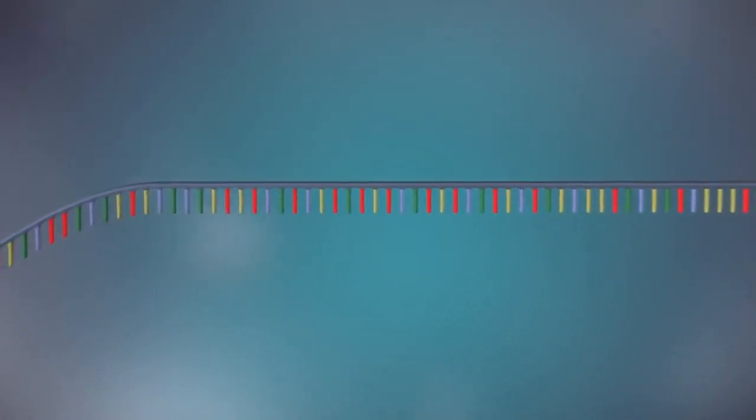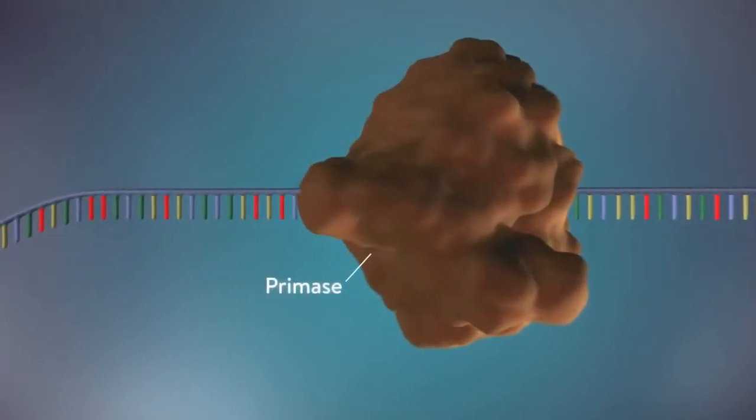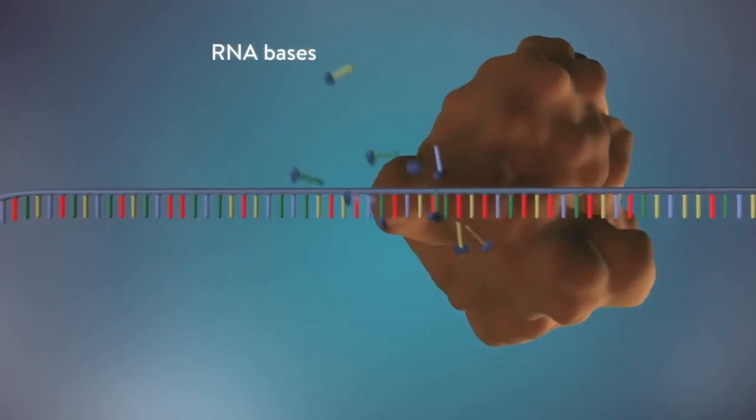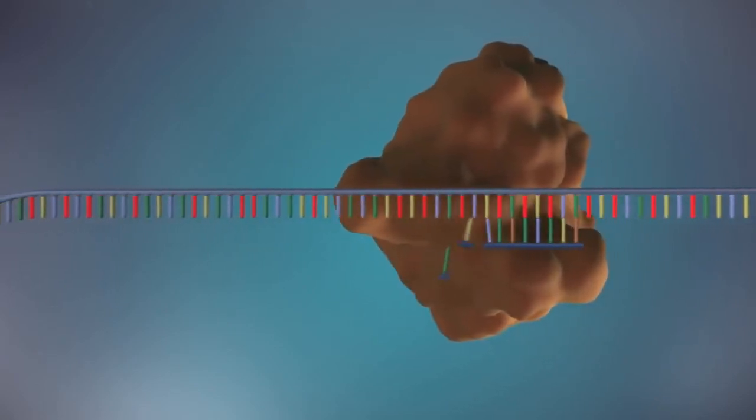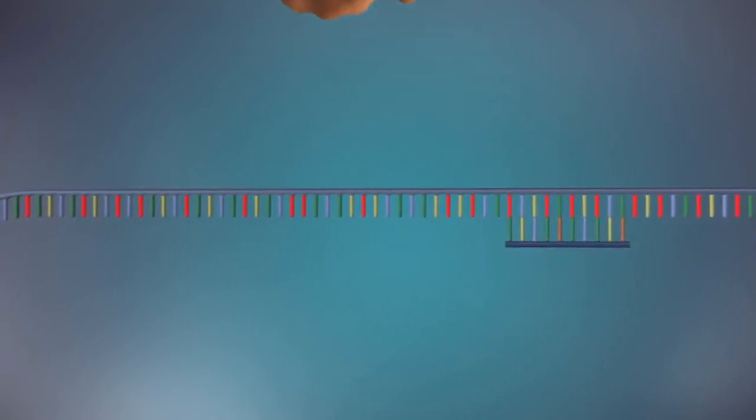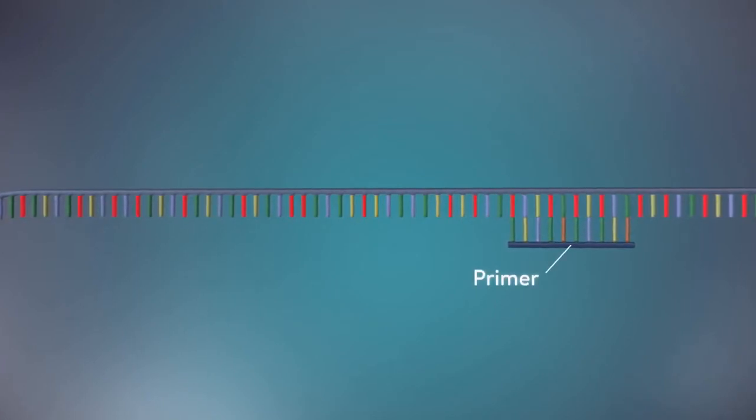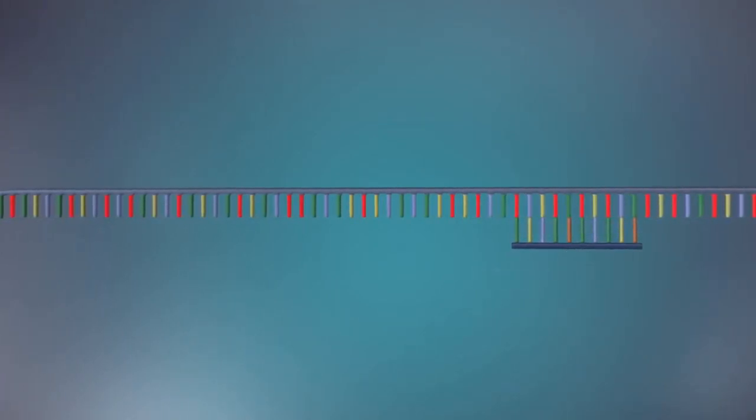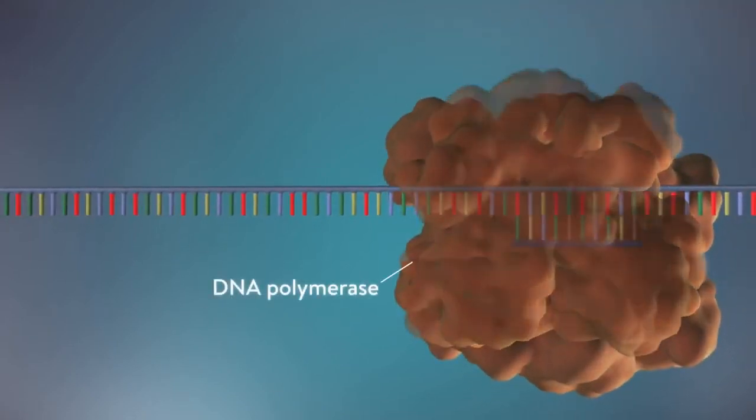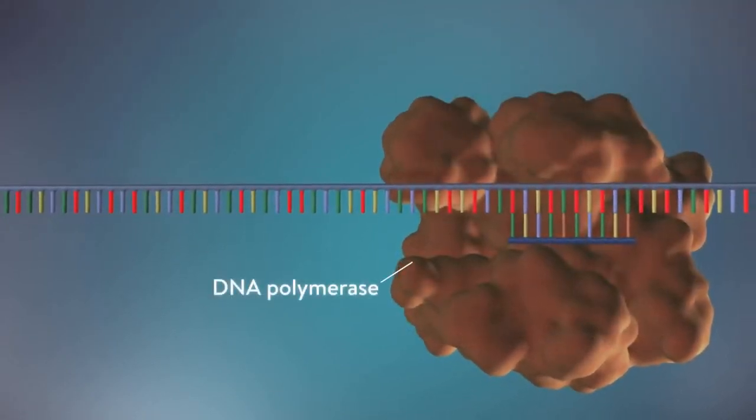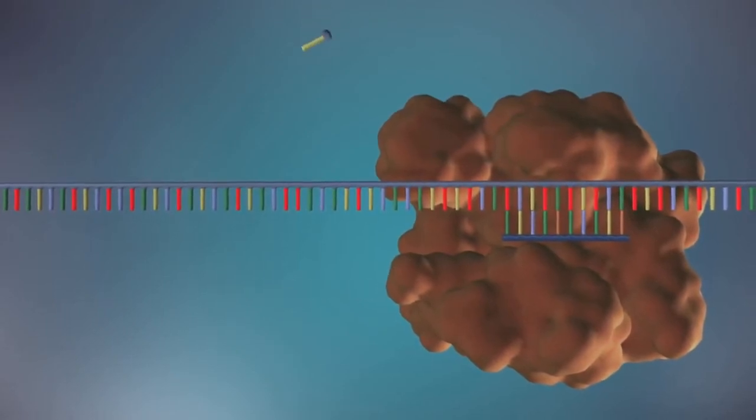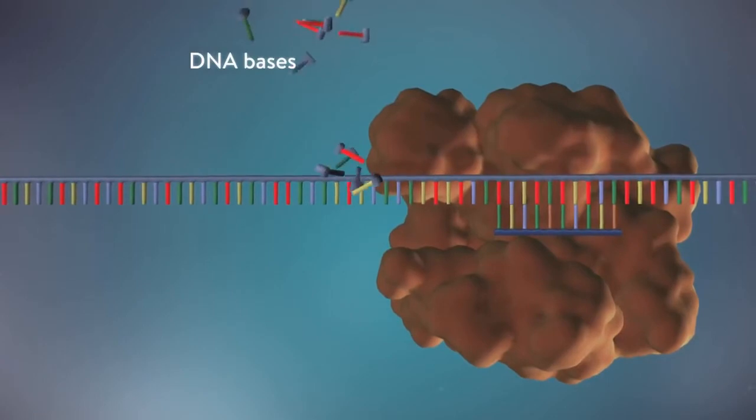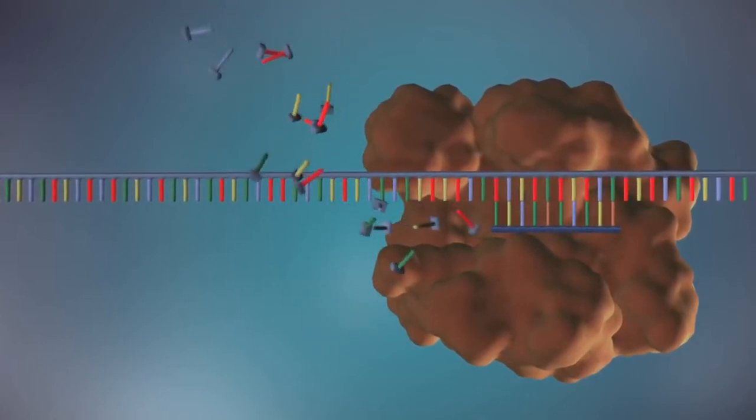An enzyme called primase adds a primer. DNA polymerase binds to the primer and will make the new strand of DNA. DNA polymerase can only add DNA bases in one direction, from the 5-prime end to the 3-prime end.